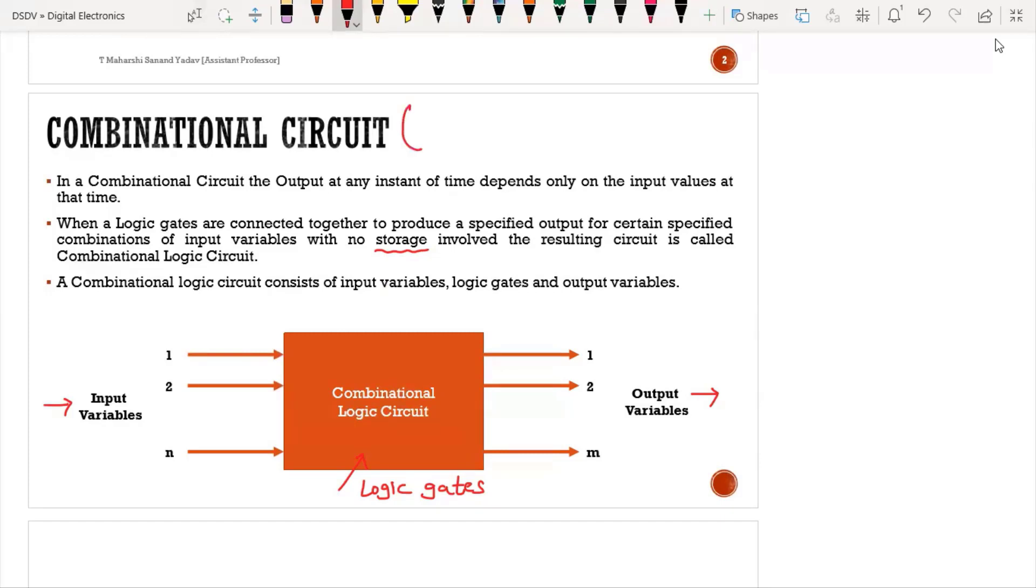So a combinational circuit is something which will not have any kind of storage. Simply you can say there is no memory component in a combinational circuit. Only if I provide input will I get some output.